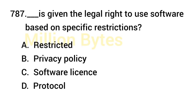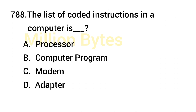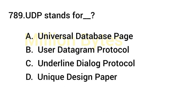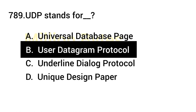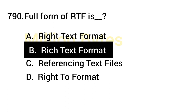A software license gives the legal right to use software based on specific restrictions. The list of coded instructions in a computer is called a Computer Program. UDP stands for User Datagram Protocol. RTF stands for Rich Text Format.